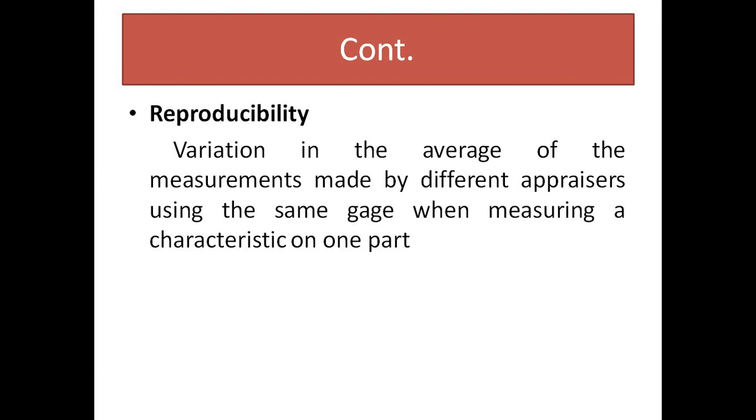Last is reproducibility, which is the variation in the average of measurements made by different appraisers using the same gauge when measuring the characteristic on one part. Different operators will measure the same part with the same instrument. The difference is: in repeatability, the same operator measures the same part with the same instrument, while in reproducibility, different operators measure the same part with the same instrument.